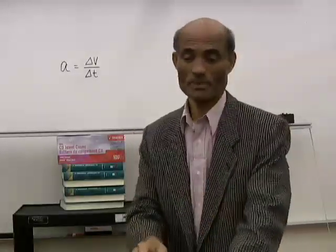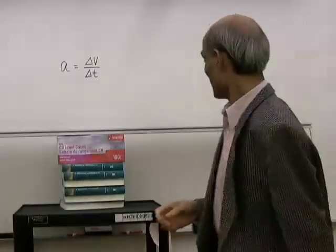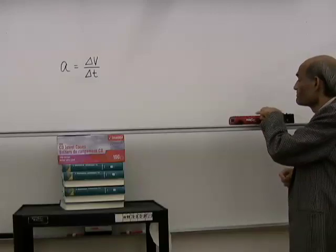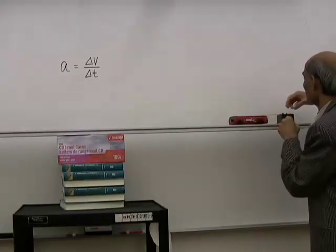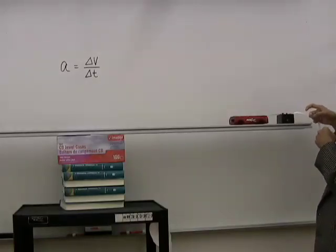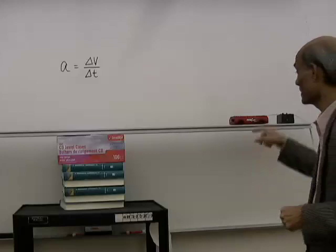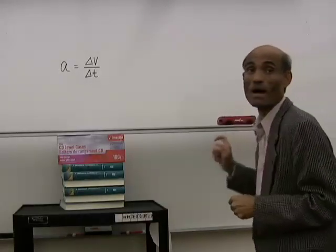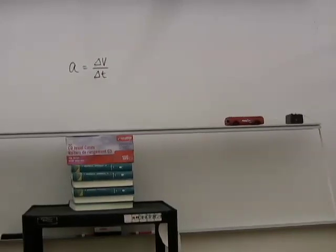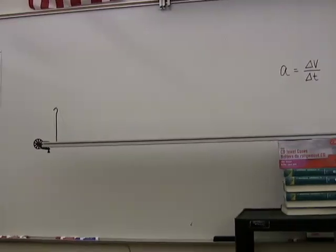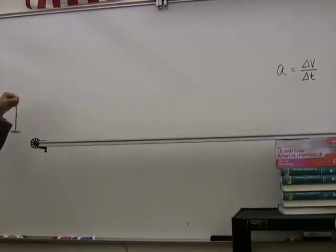Now look at the activity. I hope everybody has the printed lab with you. We are going to look at the first activity. I have a trolley attached to a tape, and the tape passes through the ticker timer. I have about 3 meters of tape on this side. I am going to show you the whole track. I am going to pull the trolley by means of a mass — I am going to suspend this mass, and there is a piece of string.